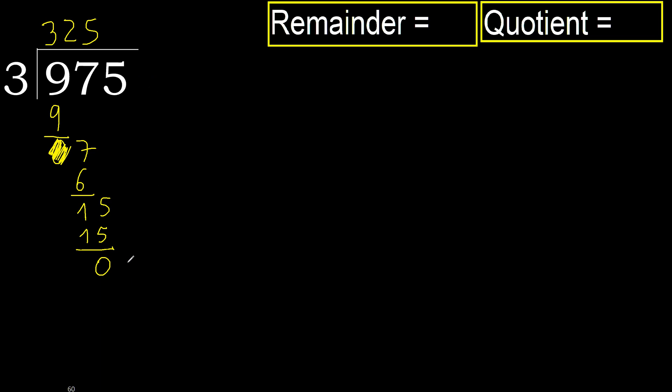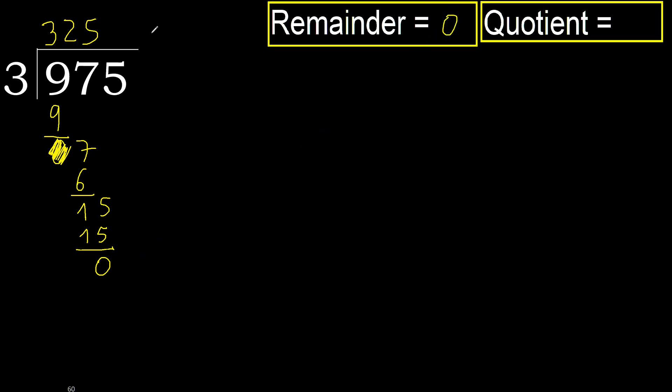That is not a number, therefore finish it. Ok, 975 divided by 3 is 325. Thank you.